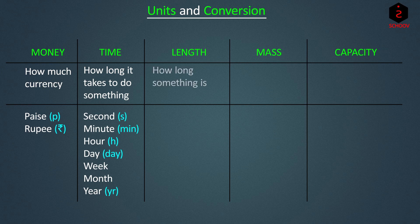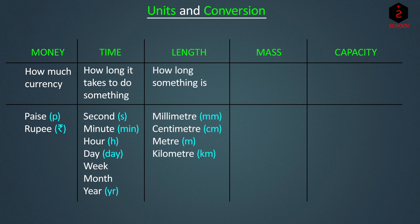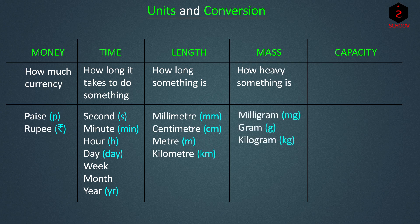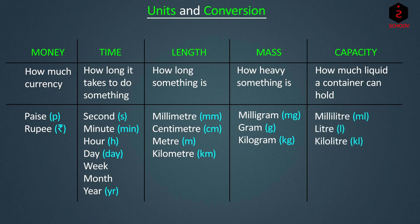Length describes how long something is. Units of length are millimetre, centimetre, metre and kilometre. Mass describes how heavy something is. Units of mass are milligram, gram and kilogram. Capacity describes how much liquid a container can hold. Units of capacity are millilitre, litre and kilolitre.